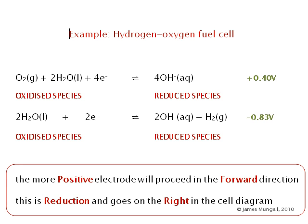So looking at this example here of the hydrogen oxygen fuel cell, two half equations, two standard electrode potentials, this one here is more positive than that one there, so we're going to say that this one will proceed in the forward direction. That is a reduction, it's gaining electrons, and we're going to put that on the right-hand side.